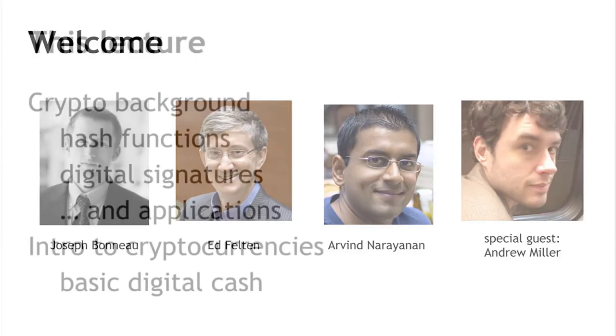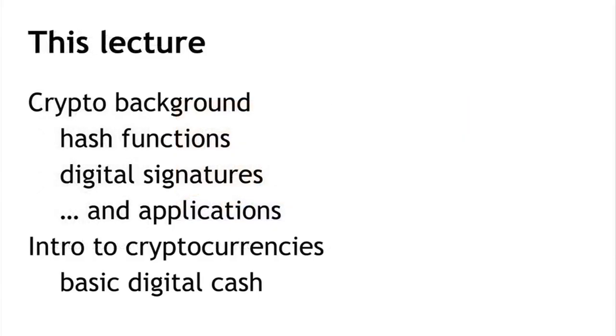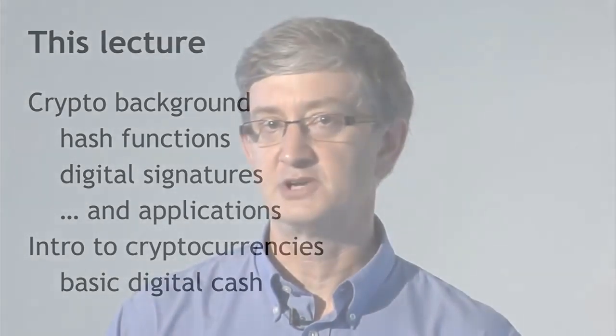There will be 11 lectures in total. In this lecture, number one, we're going to do two things. First, we'll introduce some cryptographic primitives that turn out to be necessary for talking about cryptocurrencies — in particular, cryptographic hashes and digital signatures — and we'll talk about some of the ways in which those are used to build cryptocurrencies. And then at the end of the lecture, we'll start talking about cryptocurrencies and give some examples of simple cryptocurrencies that illustrate some of the design challenges we need to deal with.